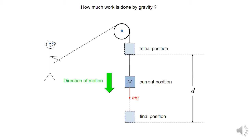Let's try to remember something about the concept of work from mechanics — you've already taken this in physics 111. Let's say you have someone holding a rope, the rope goes over a pulley, and there's a mass attached to the rope. This is the initial position of the mass, and then they drop the mass through some distance d, which reaches the final position.